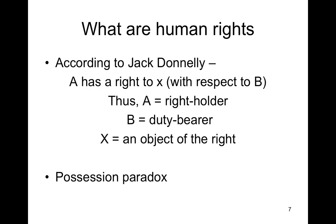One claims a human right, Donnelly says, in the hope of ultimately creating a society where such claims will no longer be necessary. Where human rights are effectively protected, we continue to have human rights but there's no need or occasion to use them. For example, we have the right to life, but generally we don't have to use that right because we live in a society where the government doesn't arbitrarily take lives. This is the centrality of the possession paradox of human rights.